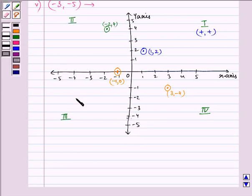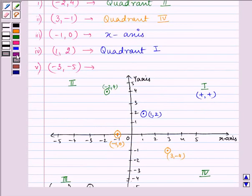So -3 and -5 lies in the third quadrant where both the abscissa and the ordinates are in negative form. So this is (-3, -5)